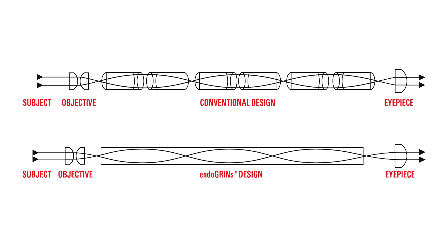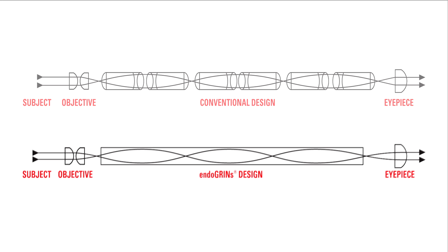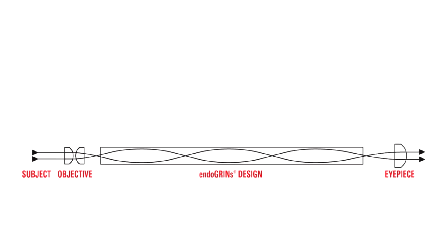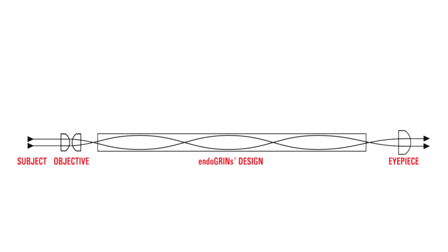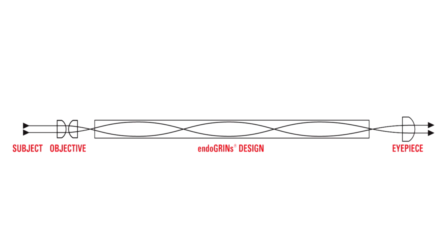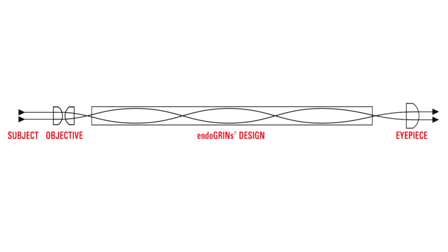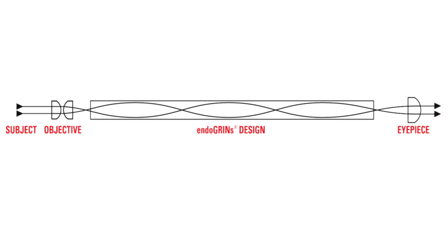What we have developed is a material which goes inside this cylinder in which the light does not go in a straight line. In fact, the light forms a sinusoid, so it goes up and down through here, which makes it very inexpensive to manufacture.